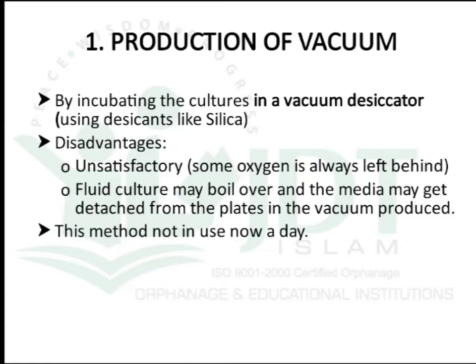Now let's discuss each method in detail. The first one is production of vacuum. In this method, we use a vacuum desiccator to incubate anaerobic cultures using desiccants like silica. But this method is not used nowadays because of many disadvantages: it is unsatisfactory because some oxygen will always be left behind, fluid cultures may boil over, and the media may get detached from the plate.